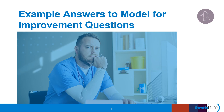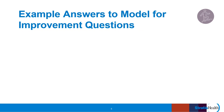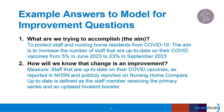Let's look at an example of how one team in a nursing home answered the first two questions — their aim and the measure that they will use to track progress. The team's aim is to protect staff and nursing home residents from COVID-19, increasing the number of staff up to date on their COVID vaccines from 5% in June of 2023 to 23% in September of 2023. The measure they will use is staff up to date on COVID vaccines as reported in NHSN and publicly reported on Nursing Home Compare. Up to date is defined as receiving the primary vaccine series and an updated bivalent booster.